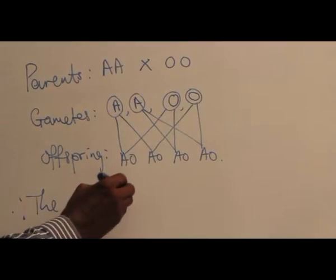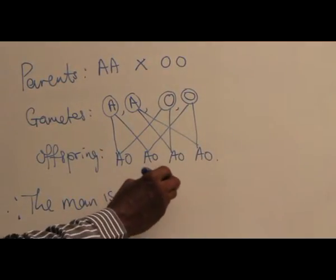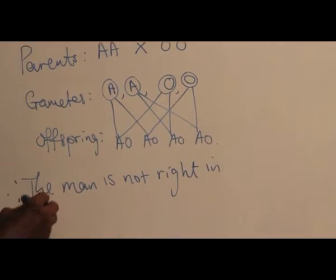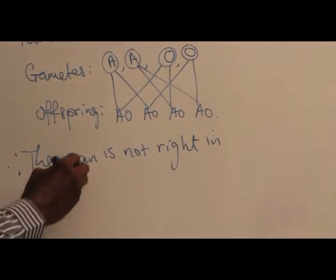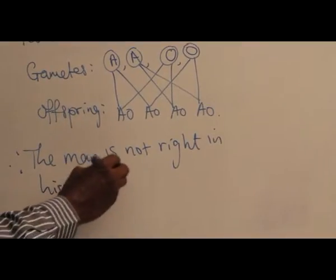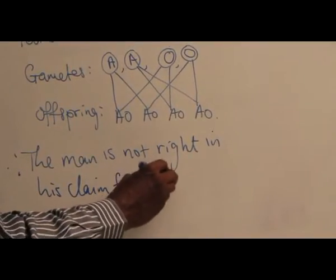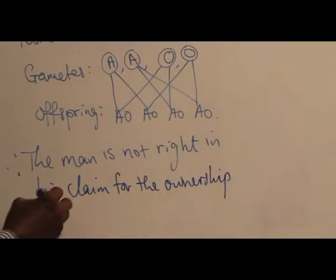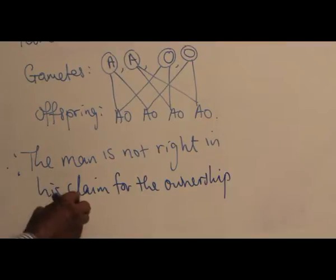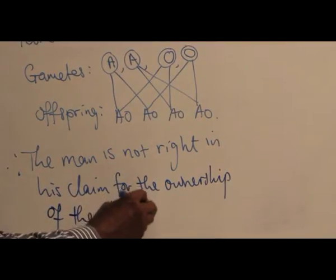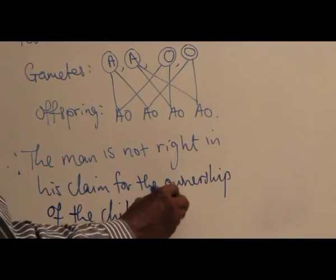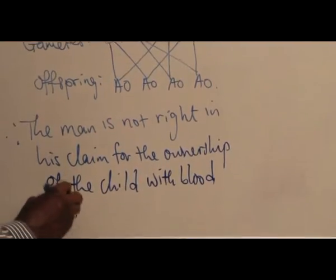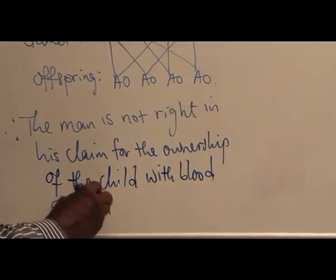the man is not right in his claim for the ownership of the child with blood group AB.